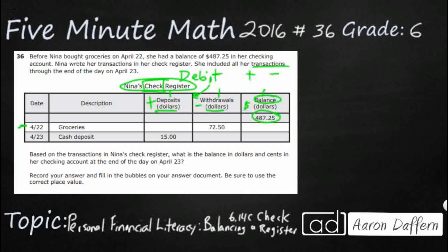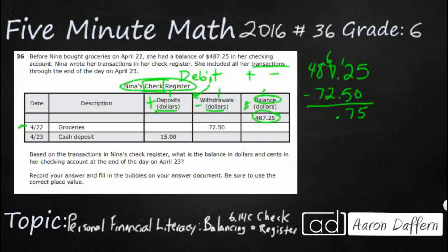So what we do here is a little subtraction. Let's see what the balance is after buying groceries. We write over here to the side: $487.25 — that's the current balance. First we have the groceries, then the cash deposit. She spent $72.50 at the store for groceries, so we withdraw $72.50. We subtract, making sure we borrow and line up our decimal. If you mess up on your subtraction, everything else gets messed up. So we get $414.75.